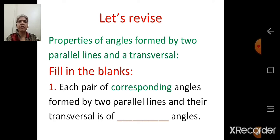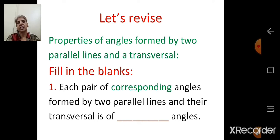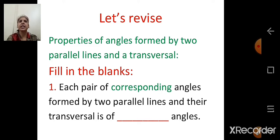We have studied about properties of angles formed by two parallel lines and the transversal. This activity in the form of fill-in-the-blanks is based on those properties. First: each pair of corresponding angles formed by two parallel lines and their transversal is of congruent angles. The answer is congruent.